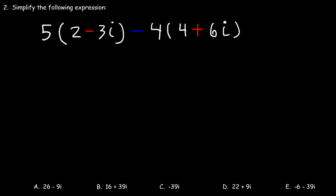Number two: simplify the following expression. First, let's distribute 5. 5 times 2 is 10, and 5 times negative 3i, that's negative 15i.